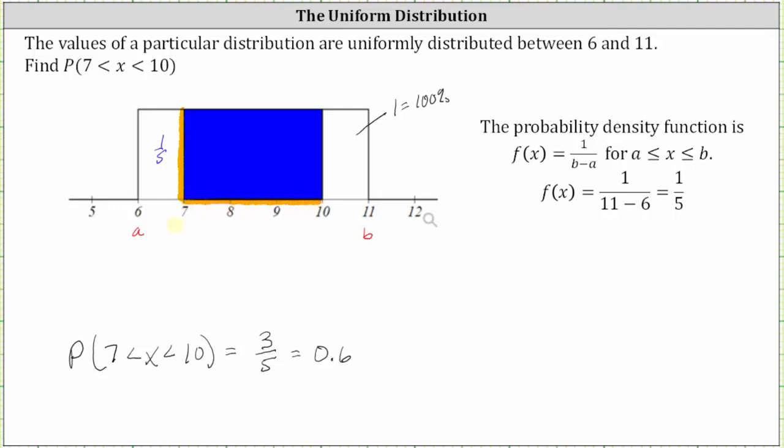To find this length, we take the value on the right and subtract the value on the left, which gives us 10 minus seven, which is equal to three.